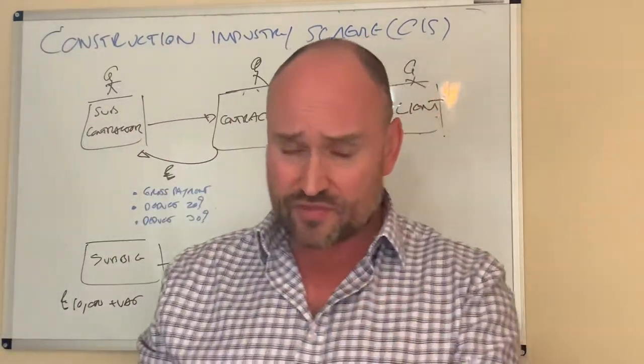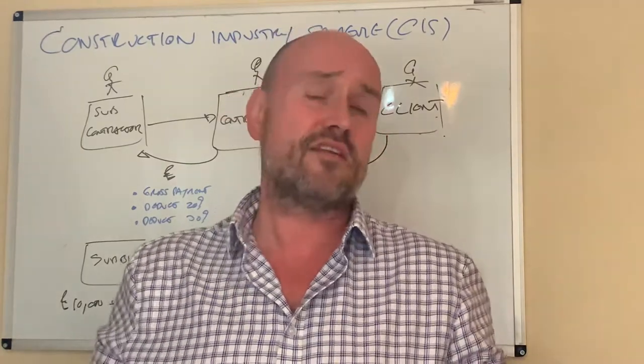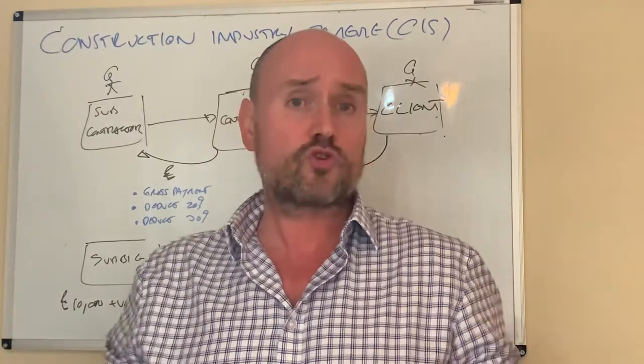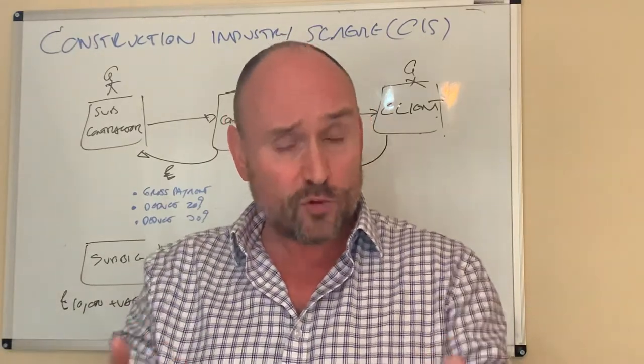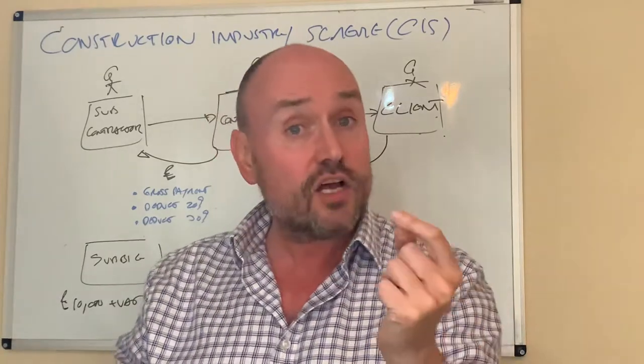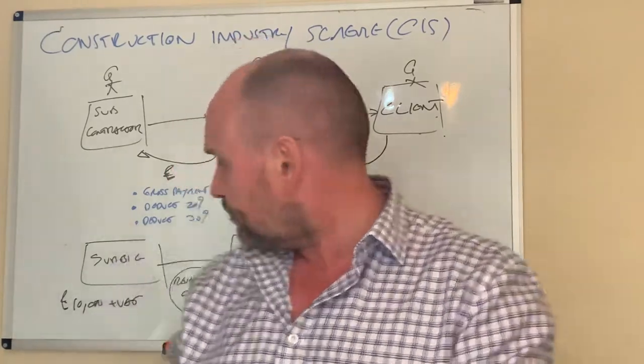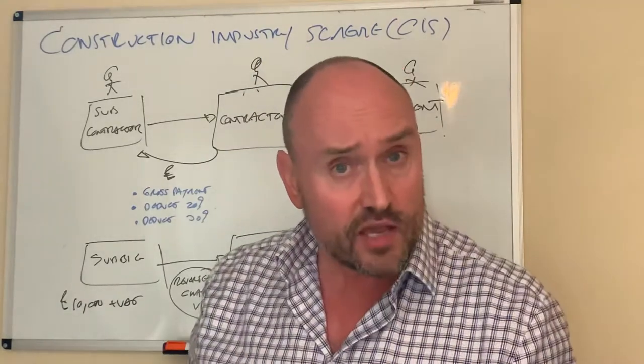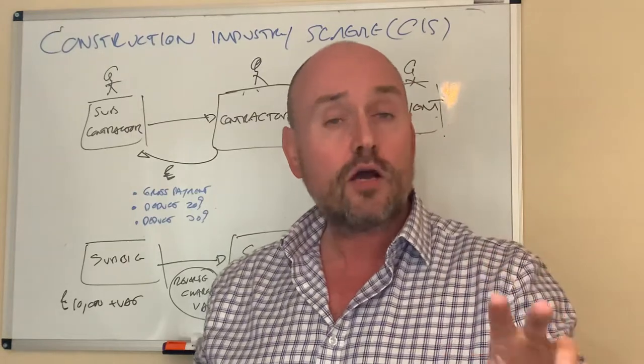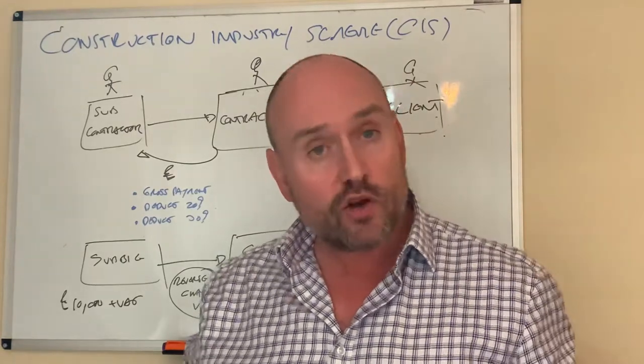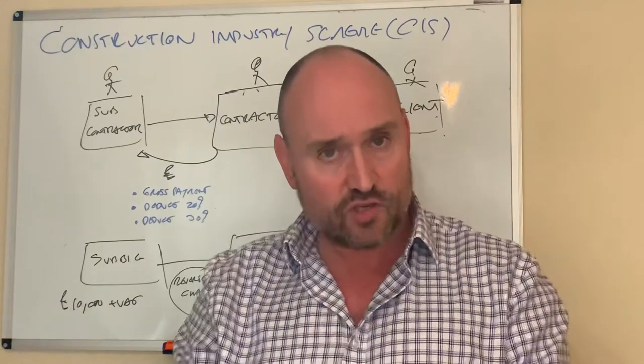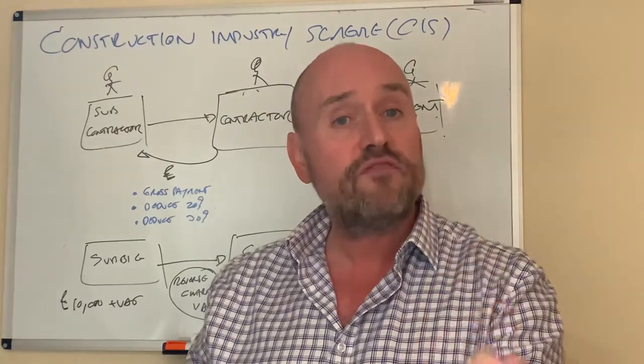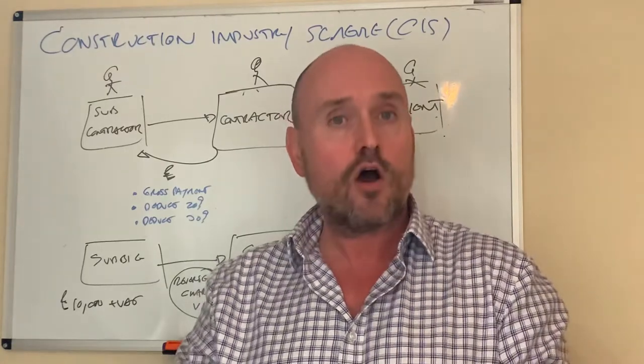Now, continuing with the theme right from the start, where basically HMRC's got it in for everyone in the construction game, hence the reason why this is in in the first place. They don't trust a lot of the thousands of people in the building game to get their taxes right. So, what they've now done is said, look, we think what is quite rife in the building game is people billing plus VAT and doing a runner with the VAT. So, to counteract that, there is now, just to add complications to the CIS, reverse charge mechanism for VAT.